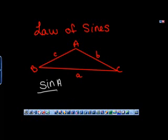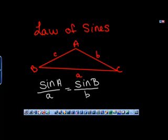The sine of angle A over the side A, so the sine of the angle over its opposite side, will equal the sine of the other angle B over its side, which will also equal the sine of the third angle over its opposite side.